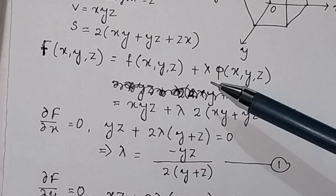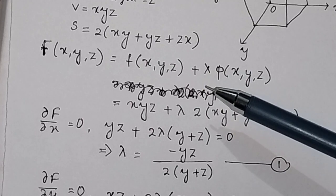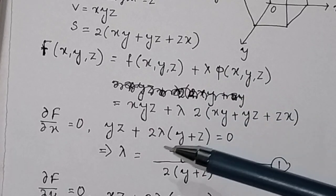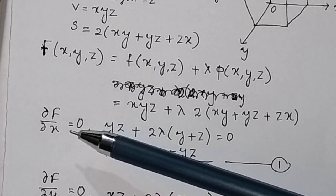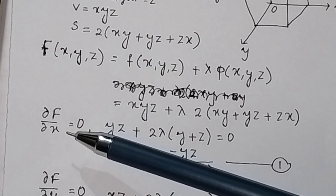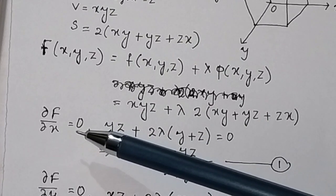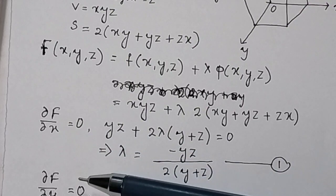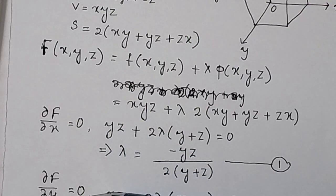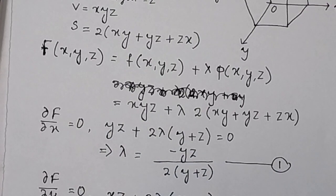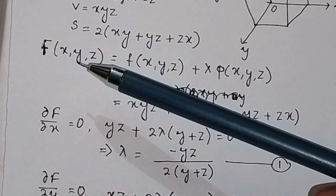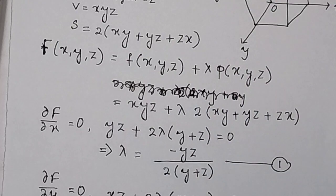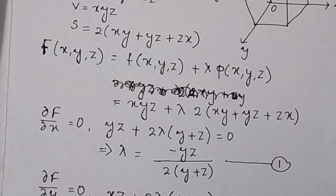To prove the maximization condition, we have to take the partial derivative of the function with respect to x and set it equal to 0, then the partial derivative with respect to y equal to 0, and the partial derivative with respect to z also equal to 0.